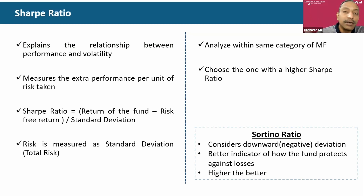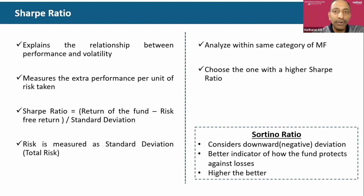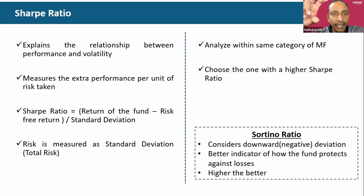It's justified if you get returns better than the fixed deposit. If the mutual fund also delivers the same seven percent that the FD delivered, you have taken the risk but not been rewarded. That is where Sharpe Ratio comes in. The formula is: return of the fund minus the risk-free return, divided by the risk taken, which is measured by standard deviation.